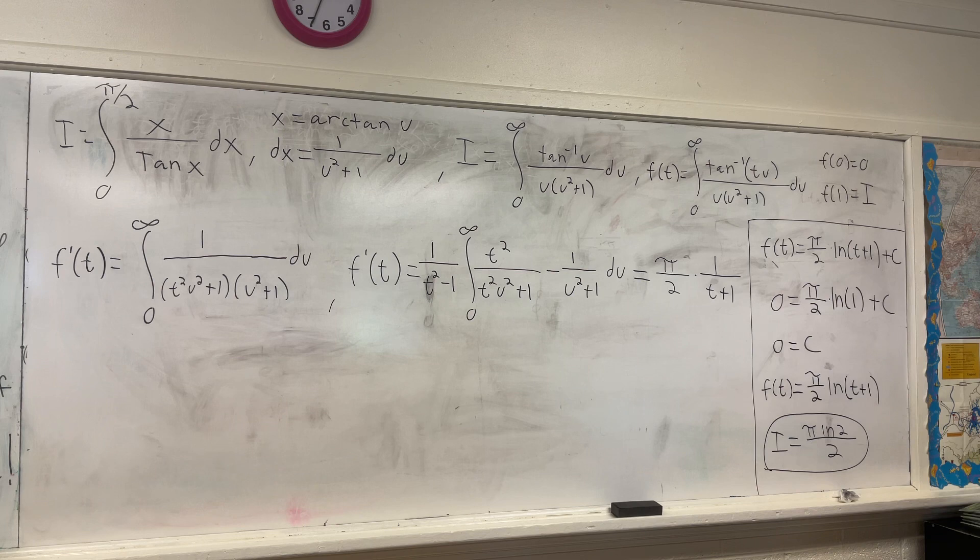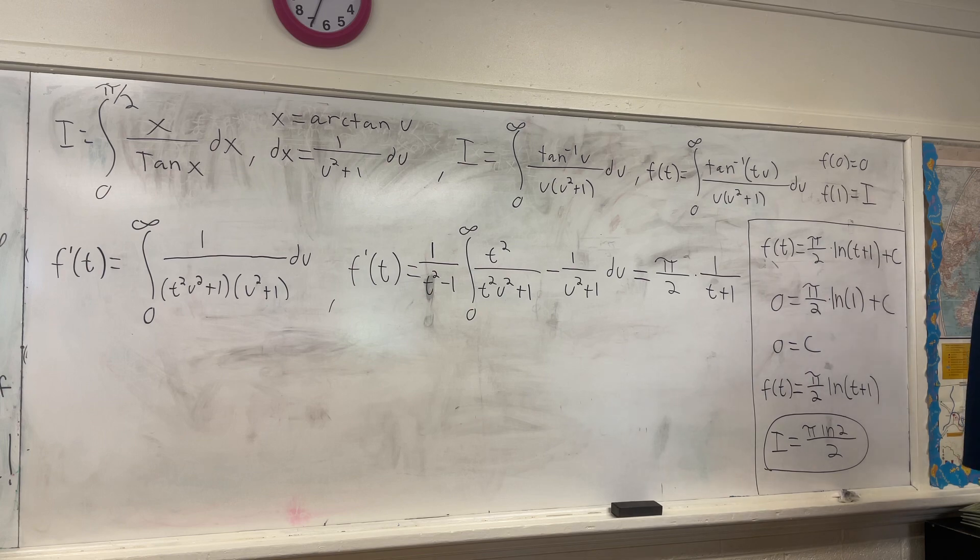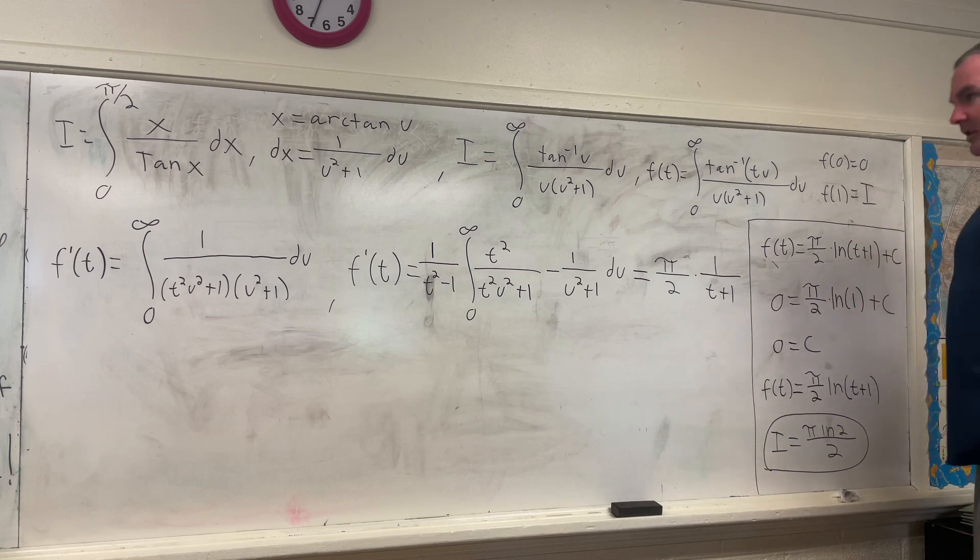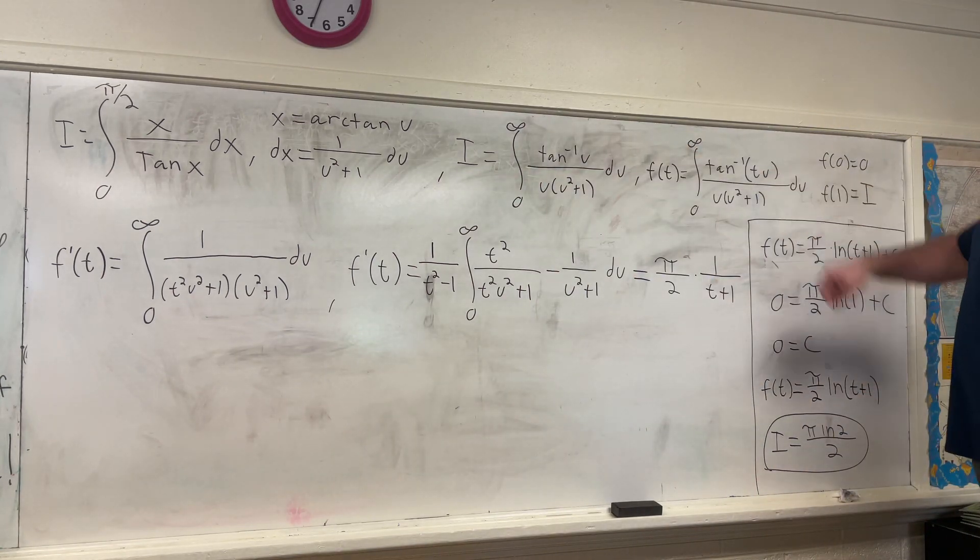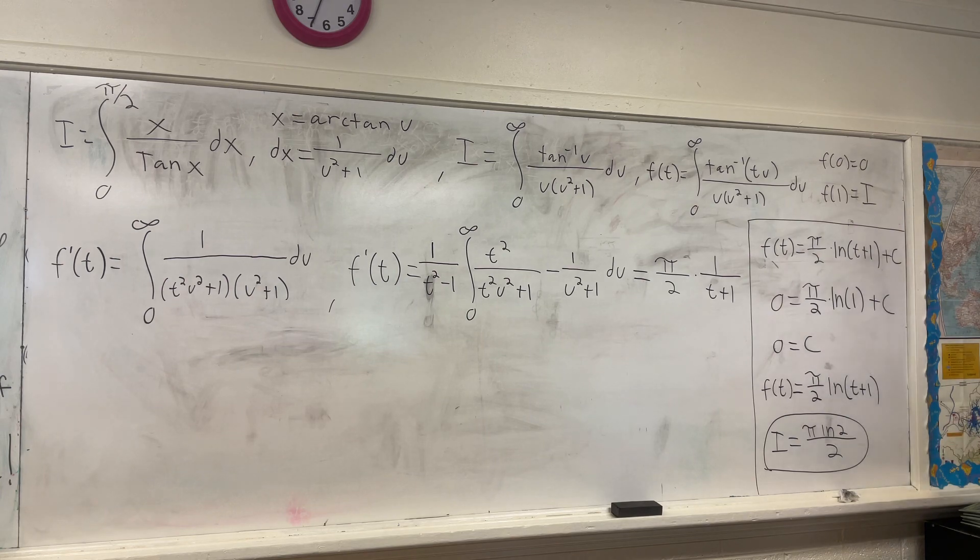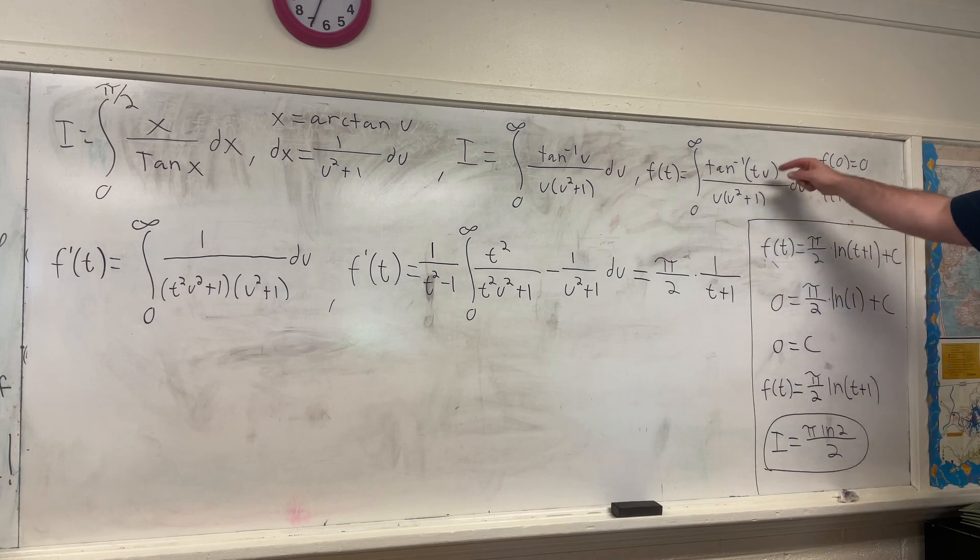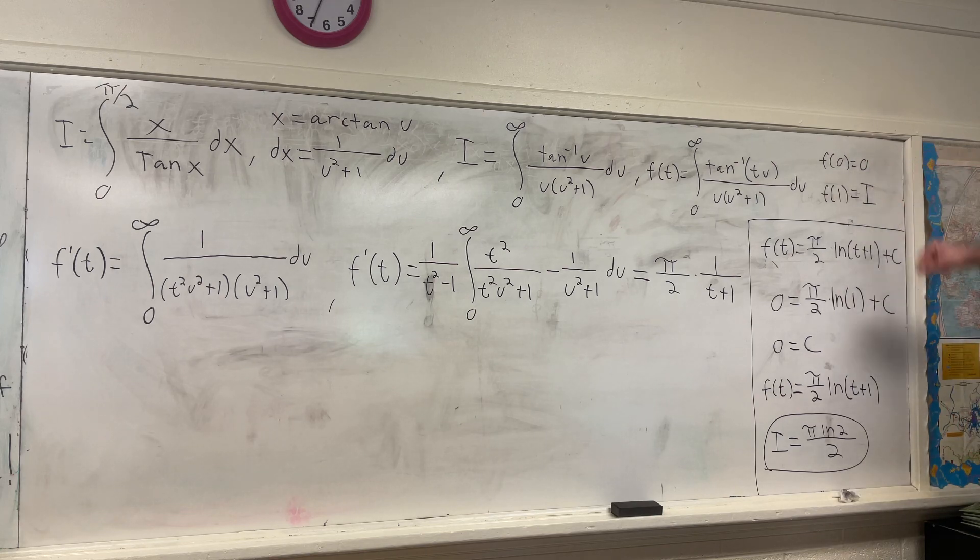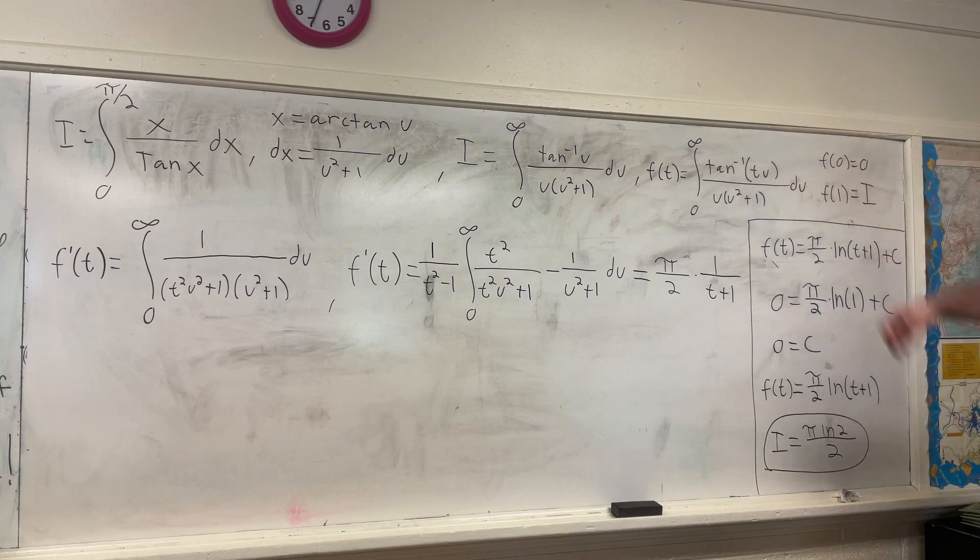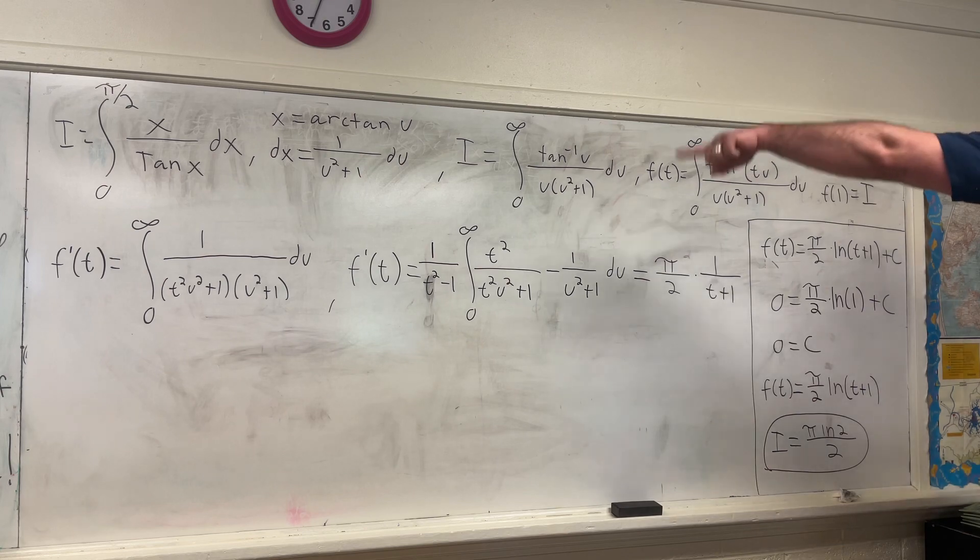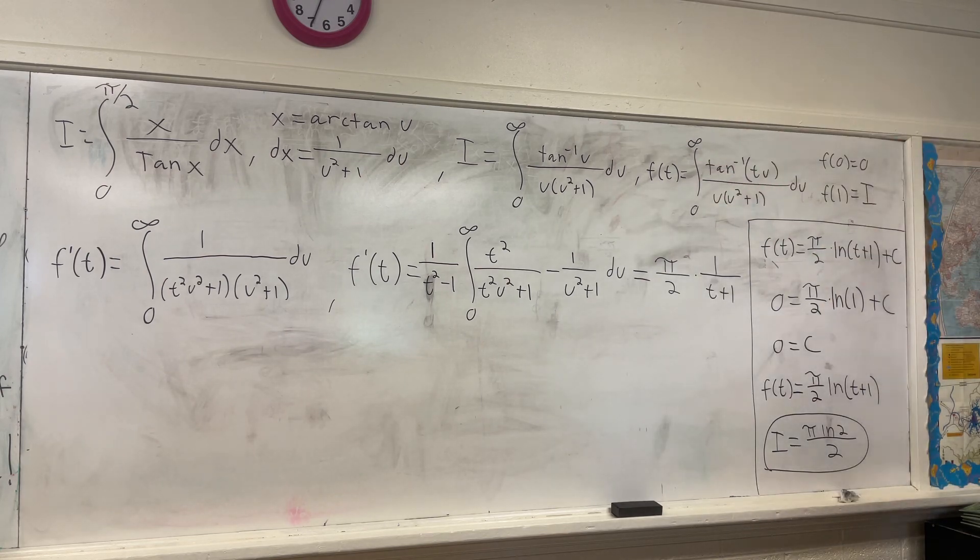Now we get into the Feynman technique here to create a function of t that closely resembles our original integral. Our original integral was that, but this is also our original integral. So in this case, I just put a t right there in front of that u to give us f of t is equal to the integral from 0 to infinity of the arctangent of tu over u times u squared plus 1 du. Making note that f at 0 is equal to 0. Plug in 0 for t right there. You'll get the arctangent of 0, which is 0. And the whole thing evaluates to 0. You plug in 1, you get i. OK, so moving on to the next step.